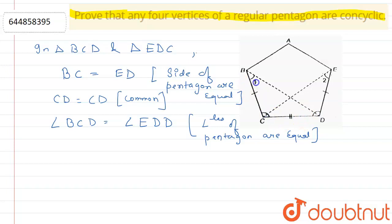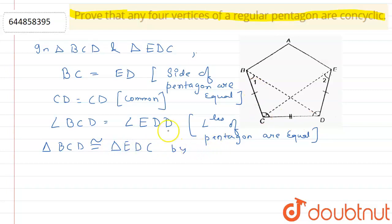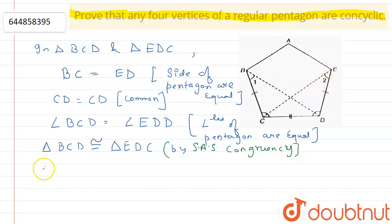So we say that triangle BCD is congruent to triangle EDC by SAS congruency. Now if these two triangles are congruent, then we say that angle 1 is equal to angle 2 by CPCT.